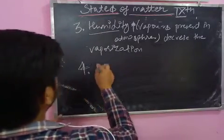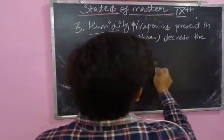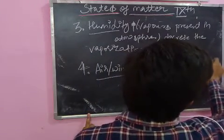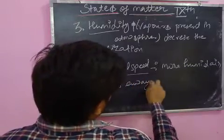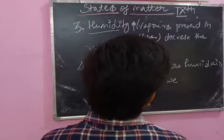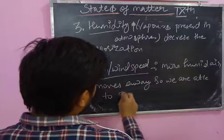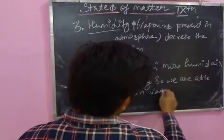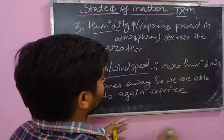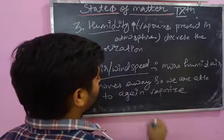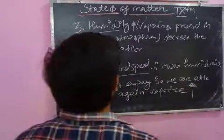The fourth factor is wind speed. As we increase the wind speed, the humid air saturated with water vapor moves away, so the atmosphere is no longer saturated. This allows more evaporation to occur — vaporization increases with higher wind speed.